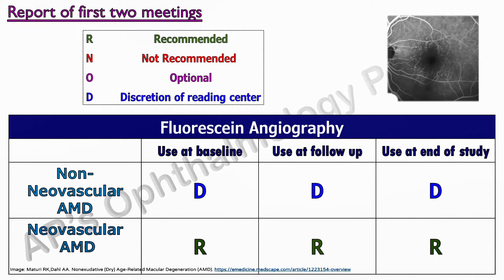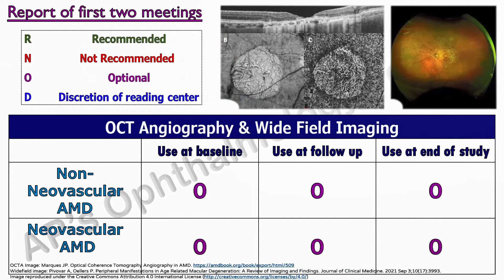Fundus fluorescein angiography in non-neovascular AMD trials can be considered to exclude the presence of neovascularization and is a discretionary recommendation. In neovascular AMD, it is recommended in all stages of the trial. Imaging should cover the central 30 degrees and a 10-minute late phase should be included. OCTA and wide-field imaging are at present optional in AMD studies for exploratory purposes.